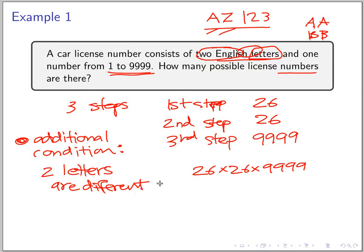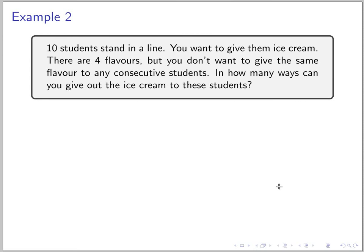How many possible license numbers are there? Think about it. Everything works fine, except in the second step you have, instead of 26 choices, you only have 25, because you have to skip the first letter. So the result would be 26 × 25 × 9999.